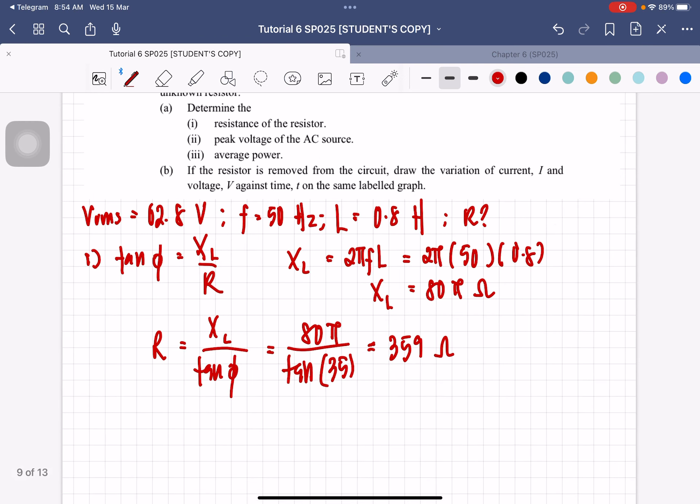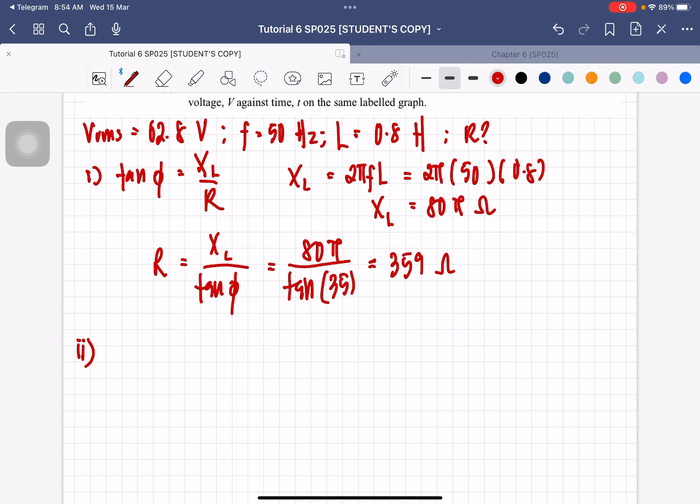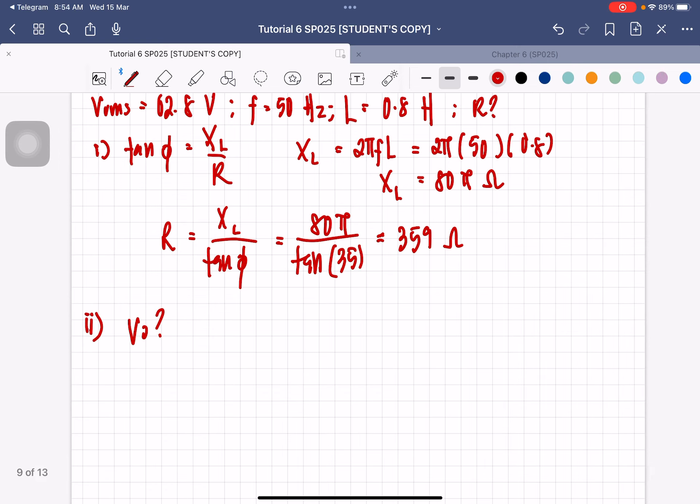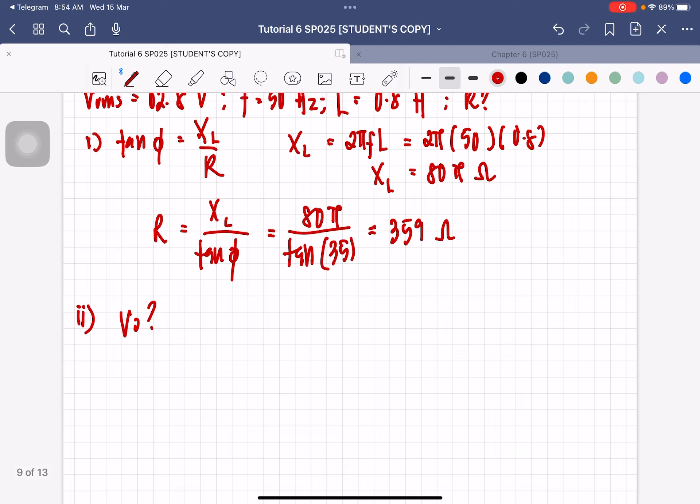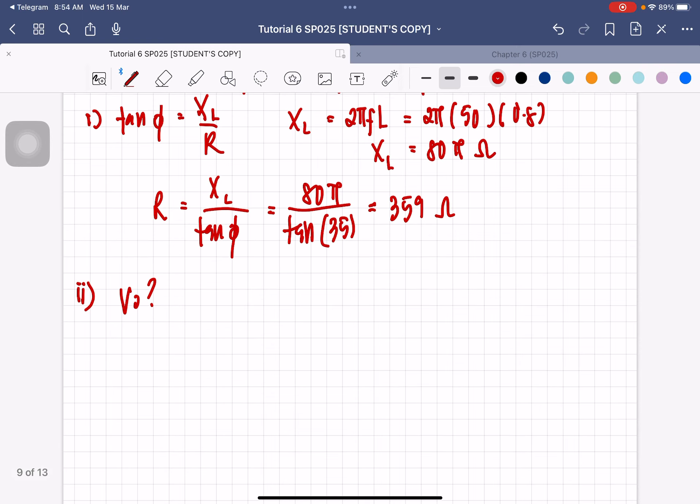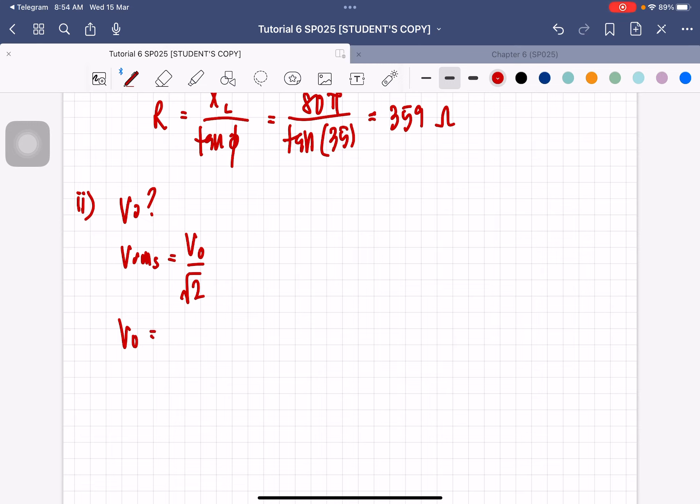Next, we have to calculate the peak voltage of the AC source. So the peak voltage is going to be V0. So how do we find V0, we are going to solve it using VRMS. We know that VRMS is going to be equal to V0 over square root 2.